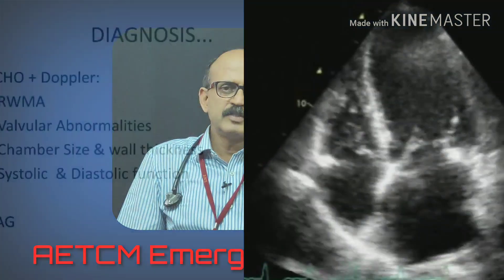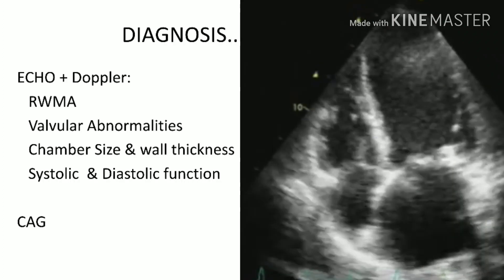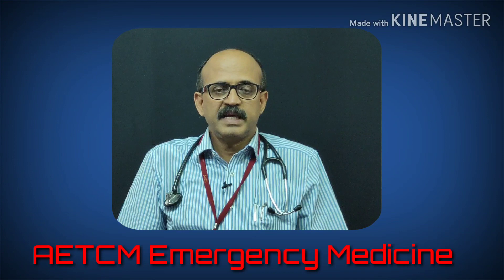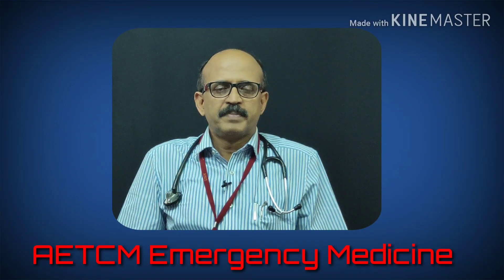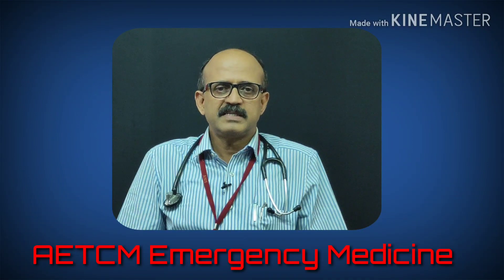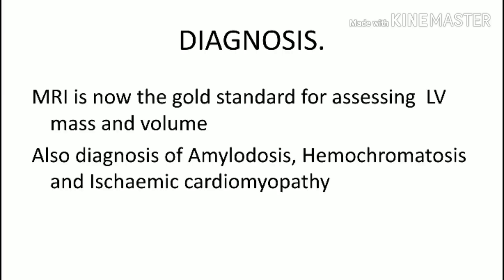Echocardiography with Doppler is a very important investigation, allowing assessment of regional wall motion abnormalities, valvular abnormalities, chamber size, wall thickness, and systolic and diastolic function. In acute valvular damage such as mitral or aortic regurgitation, the presentation itself may be cardiac failure. Coronary angiography is important in evaluating chronic heart failure, as correctable coronary disease can aid management. Cardiac MRI is the gold standard for assessing LV mass and volume, and helps detect infiltrative conditions such as amyloidosis, hemochromatosis, and ischemic cardiomyopathy.